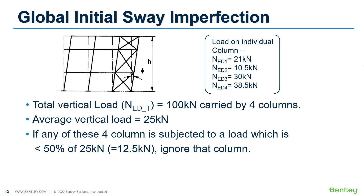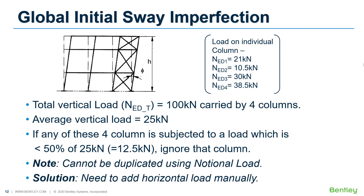For M value (number of columns in the row), only those columns carrying not less than 50% of the average vertical load on columns in that plane should be considered. For example, if there are 4 columns with a total vertical load of 100 kN, the average load per column is 25 kN; if any column carries less than 50% of 25 kN (i.e., less than 12.5 kN), it should be ignored from M value calculation. When we apply the notional load using this phi value, all columns carrying vertical load will be subjected to the horizontal load — there is no way to ignore a column using the notional load feature. Since the effect of neglecting a column based on this criterion is very small, we can consider all columns and use the notional load feature without any major change in results.